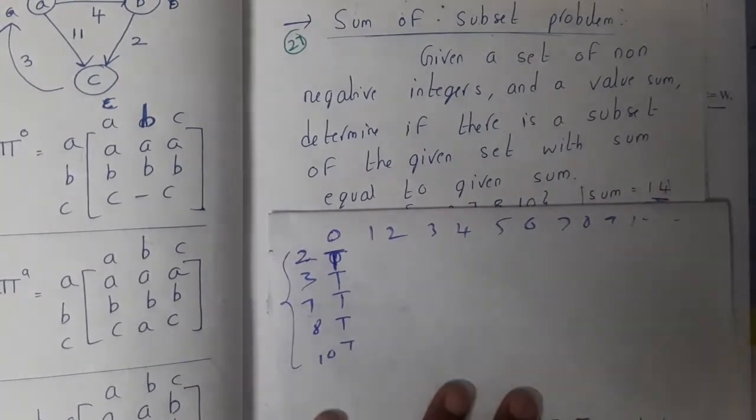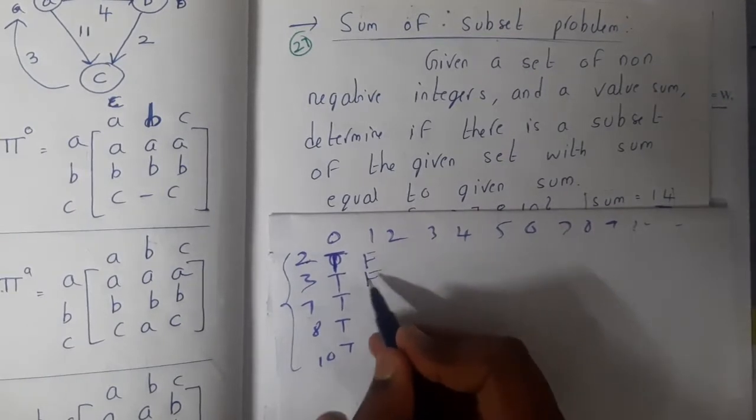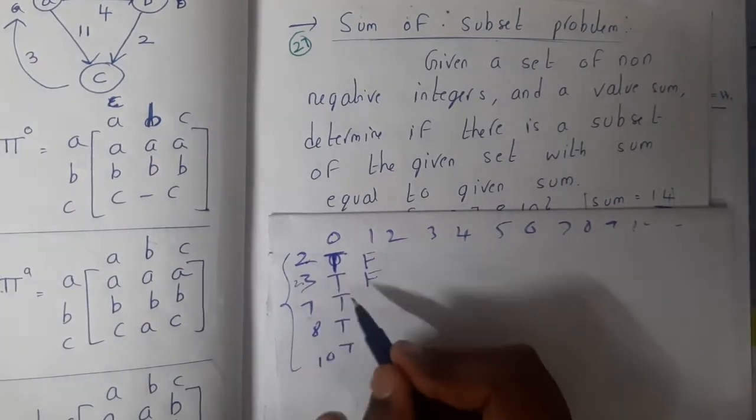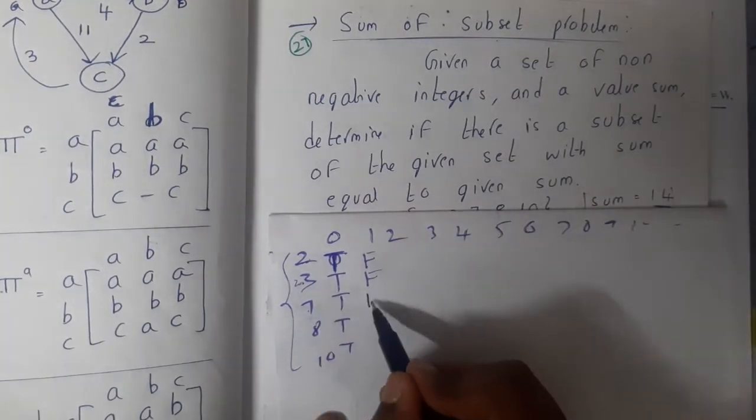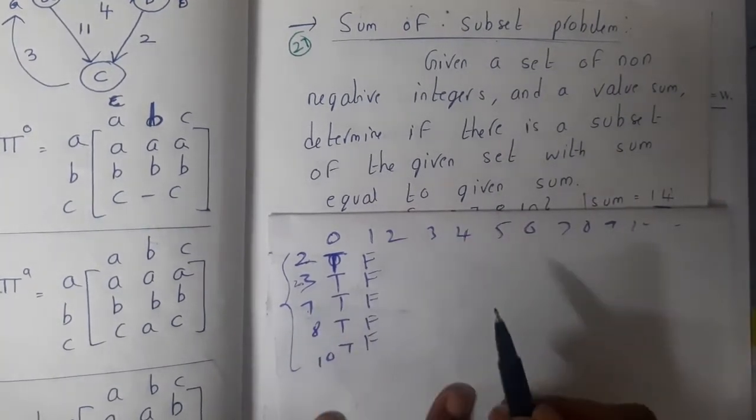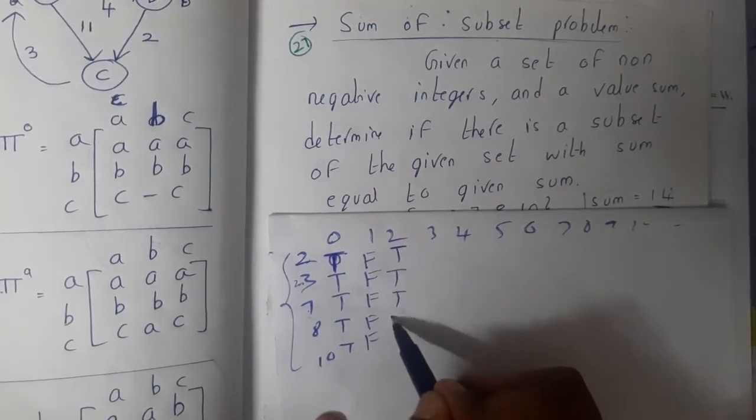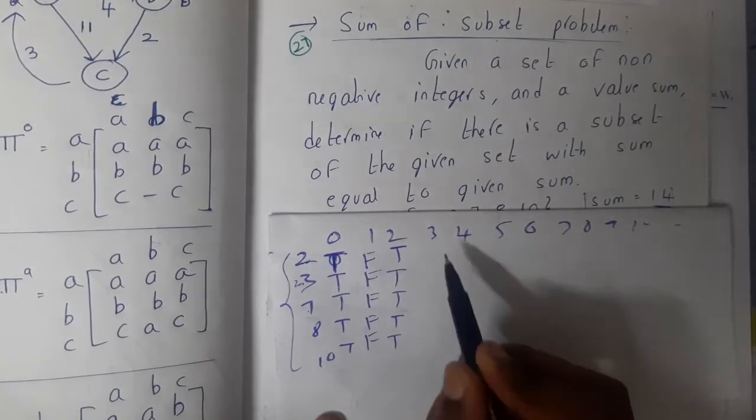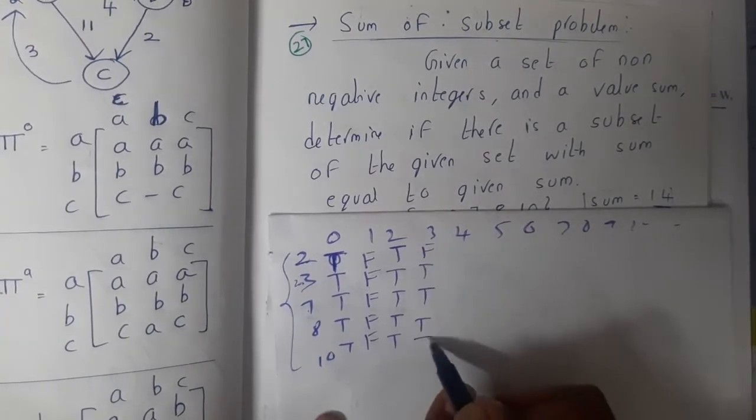Using 2 can you make 1? No. Using 3 can you make 1? No. It's indirectly {2, 3}. Using {2, 3, 7} can you make 1? No, so all the answers will be false. Using 2 can you make 2? Yes, true. Once one is true, everything will be true. Using 3 you can make 3, true. Using 2 can you make 4? No. Using 3 can you make 4? No.